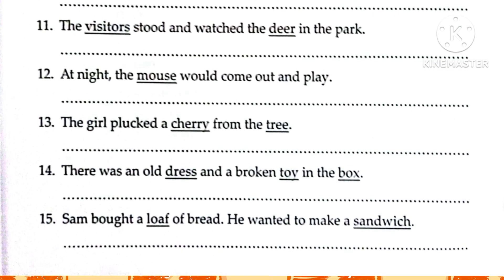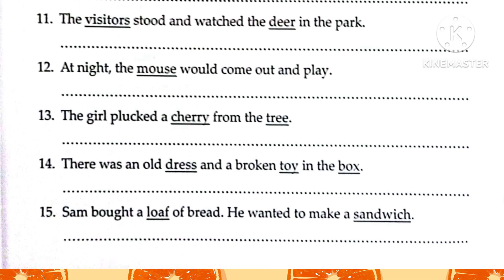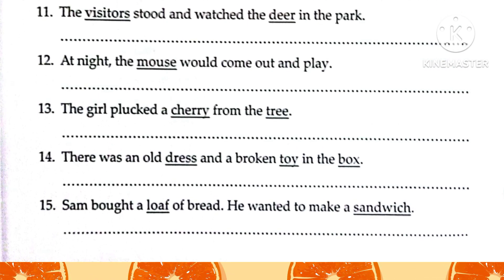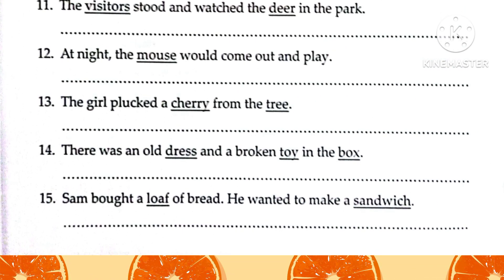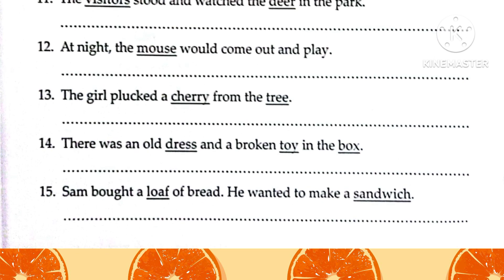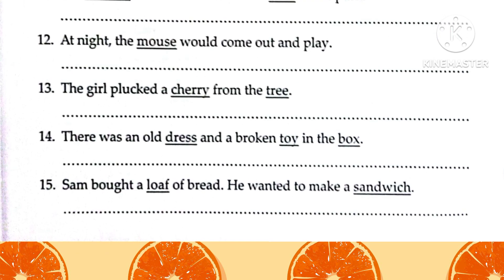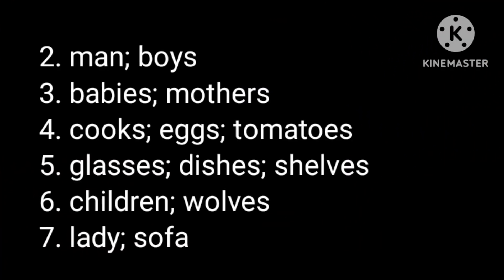Continuing Exercise B: 11. The visitors stood and watched the deer in the park. 12. At night the mouse would come out and play. 13. The girl plucked a cherry from the tree. 14. There was an old dress and a broken toy in the box. 15. Sam bought a loaf of bread; he wanted to make a sandwich.